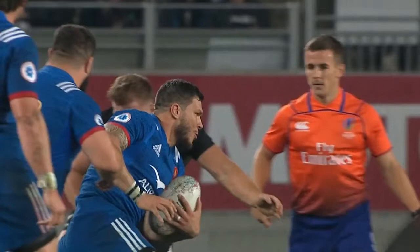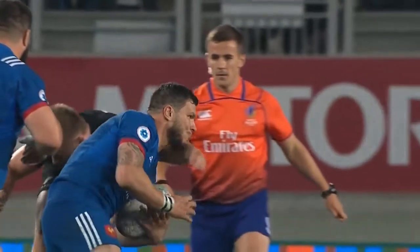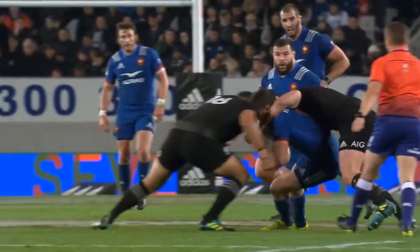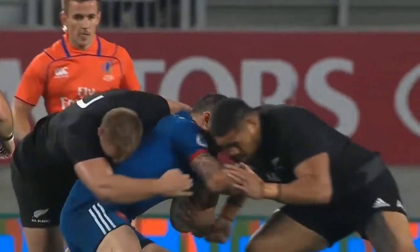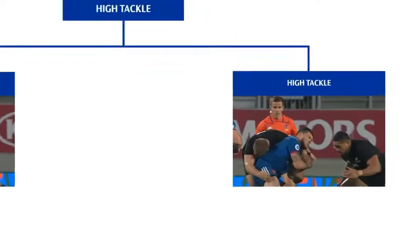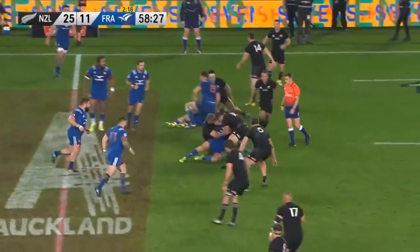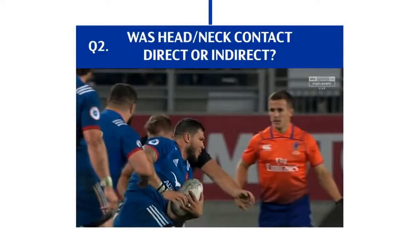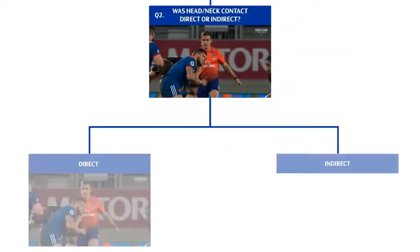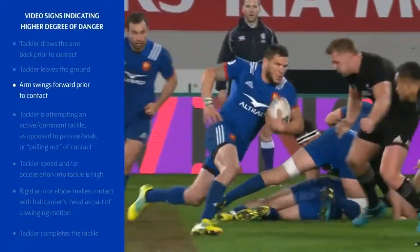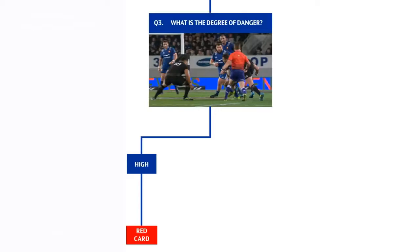Let's take a look at some more examples. In this sequence we see two tackles. The first is a high tackle because the arm of the tackler is in front of his body at contact and then makes contact with the ball carrier's head. The second tackle is a shoulder charge because the tackler's right arm on the contact side is behind his body at the moment of contact with the ball carrier. For the high tackle, the contact is direct arm to head with high danger - indicated by the arm moving forward prior to contact and the tackler completing the tackle - resulting in an initial decision of a red card.